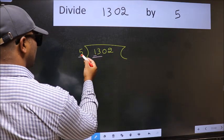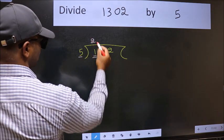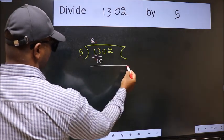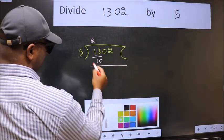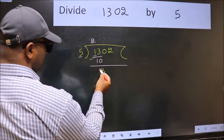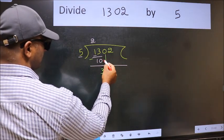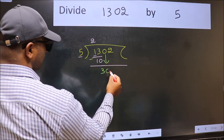A number close to 13 in 5 table is 5 times 2 is 10. Now we subtract, we get 3. After this, bring down the beside number. So, 0 down.